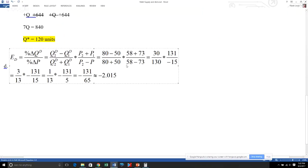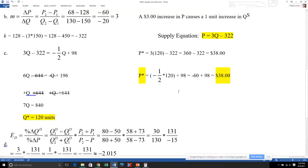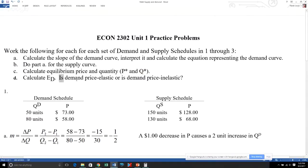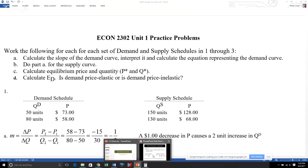That is the answer for E sub D. I want to stress again we will only go to decimals in the event you cannot reduce this as a fraction with numerator and denominator both less than a hundred. That's part of question D: calculate E sub D. But then the next question asks: is demand price elastic or is demand price inelastic?